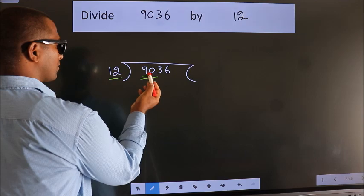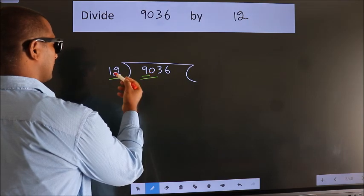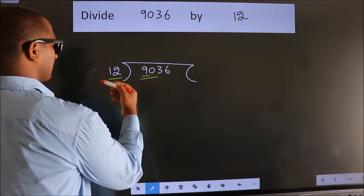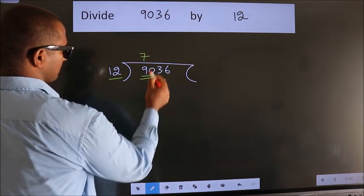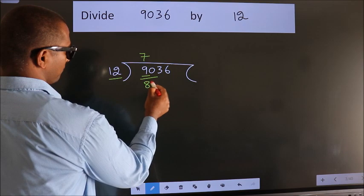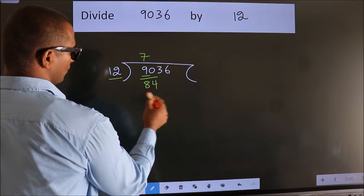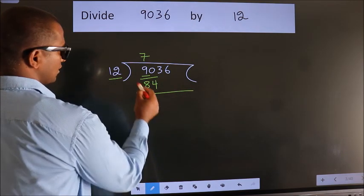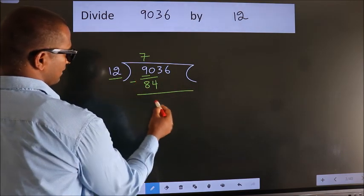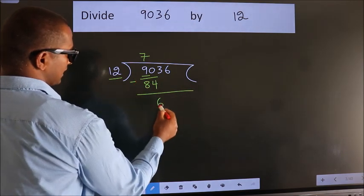A number close to 90 in the 12 times table is 12 sevens, 84. Now we should subtract. We get 6.